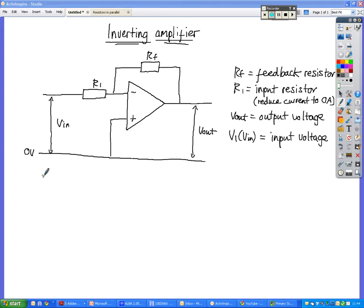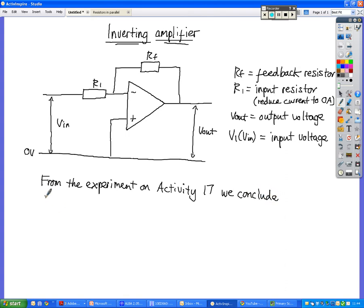So now we've conducted the experiment from the experiment on activity 17. We conclude that Vout over Vin or V1 is equal to negative RF over R1. Now, this is the formula for inverting mode.